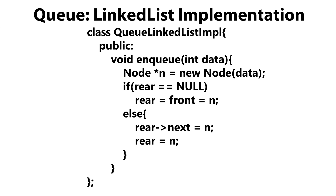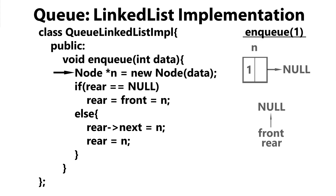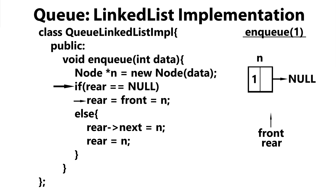Let's give an example of the enqueue method in action. Let's say I want to enqueue one onto our queue. First, we create a new node based on the data being passed in — in this case, it's going to be one. Then we come down here and check to see if rear is equal to null. It is. So in this case, what we're going to do is set both rear and front to both point to n.